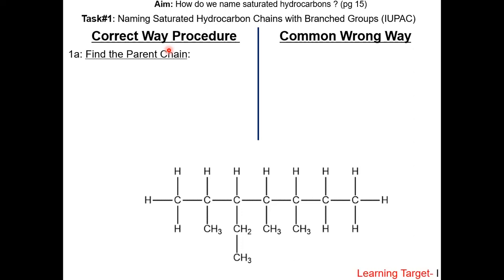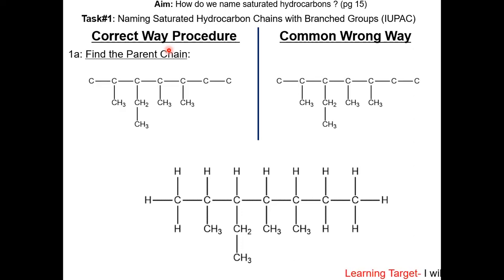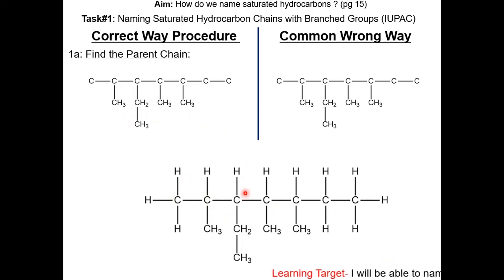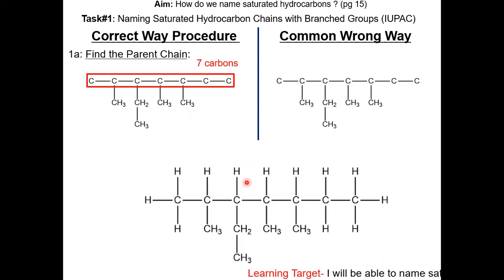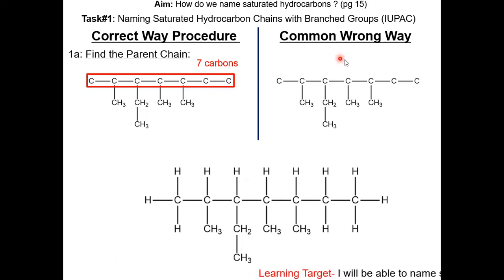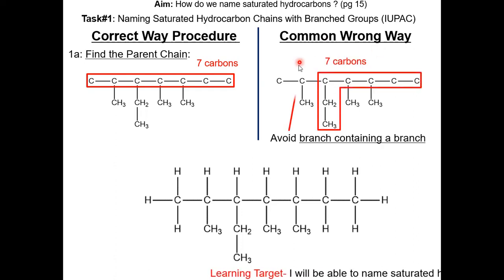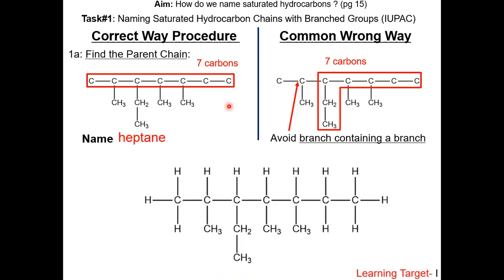The first step is always to find the parent chain first. Here we have a carbon skeleton of this molecule. The parent chain is 7 carbons, which is the longest possible chain. Here's a common wrong way of finding the parent chain — you want to avoid a branch containing a branch. Since the parent chain is 7 carbons, the name of the parent chain is heptane.